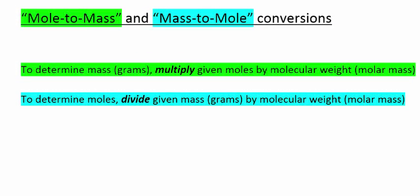So the first type, when converting moles to mass, to determine the mass or the grams, multiply the given moles by the molecular weight, or sometimes called the molar mass.